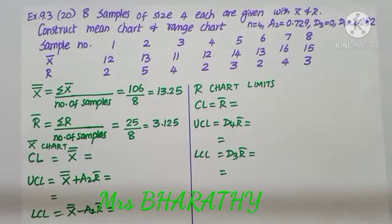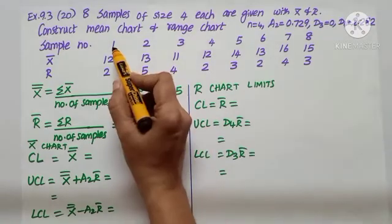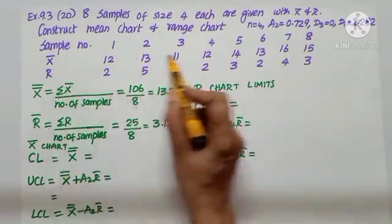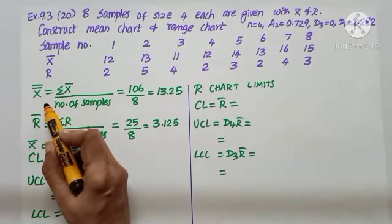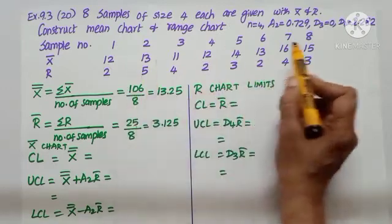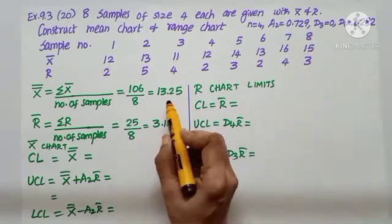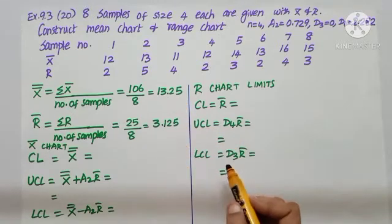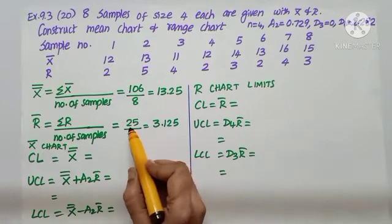Question number 28: samples of size 4 each are given with x-bar and r. Construct the mean chart and range chart. Sample numbers 1 to 8 are given with x-bar and r values. X-double-bar equals sigma x-bar divided by 8. With 8 samples, we divide and get 13.25. Sigma r — adding all range values — gives us 25.